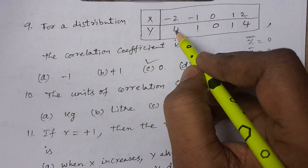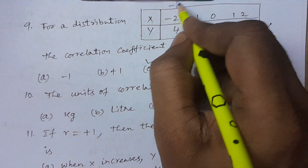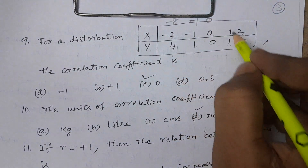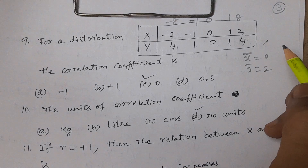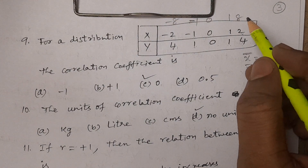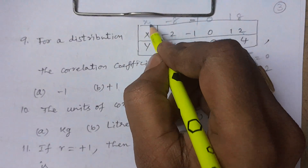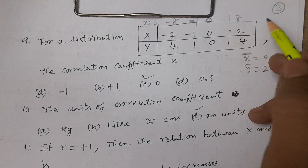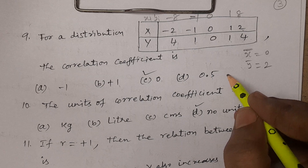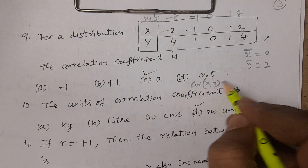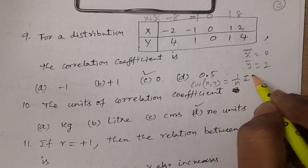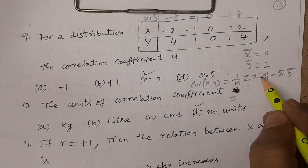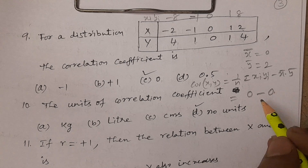Now calculate summation xi times yi: four times minus two is minus eight, one times minus one is minus one, zero times zero is zero, one times one is one, four times two is eight. Summation xi yi equals minus eight minus one plus zero plus one plus eight, which equals zero.